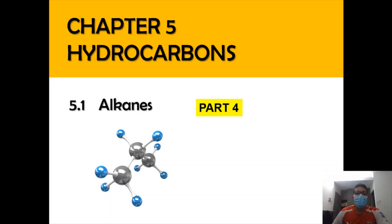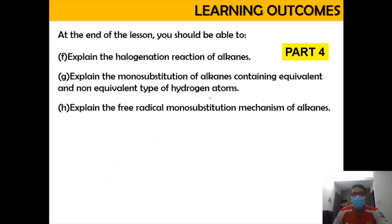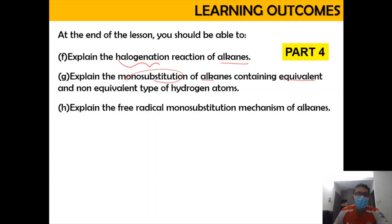Assalamualaikum and a very good morning. We are now in Chapter 5, which is hydrocarbon, focusing on subtopic 5.1 alkene, part 4 of this video. In this video, we're going to explain the halogenation reaction of alkenes and look into the monosubstitution of alkenes containing equivalent and non-equivalent types of hydrogen atoms.